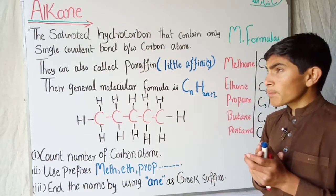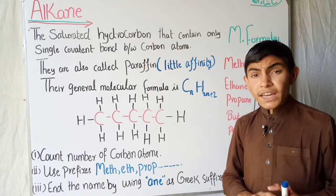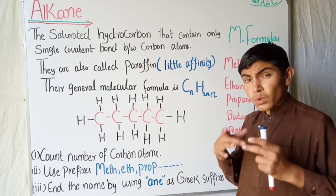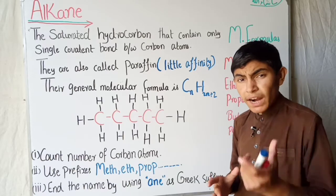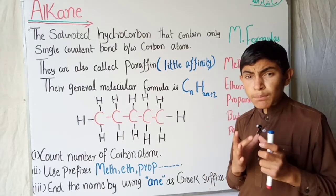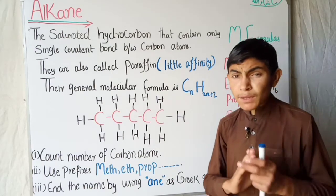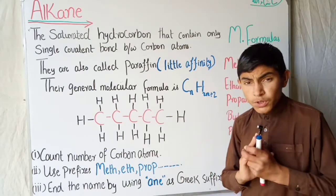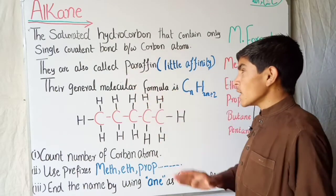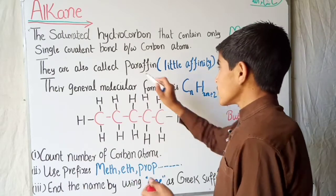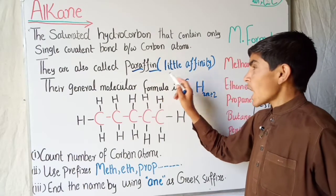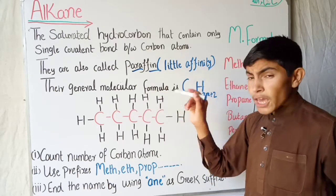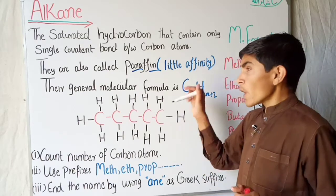The alkane contains single bonds, and due to the single bond it is saturated — it means there is no addition of other elements. Its bonds are completed because carbon forms four covalent bonds, and in alkane there is no chance of further bond formation. Therefore we say alkane is a saturated hydrocarbon. They are also called paraffins. The word paraffin means 'parum' meaning little, and 'affinity,' so this is a hydrocarbon which has little affinity for bonding with other elements.